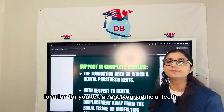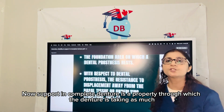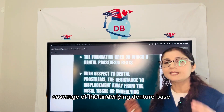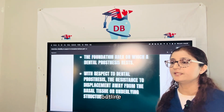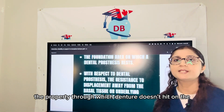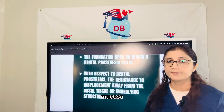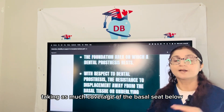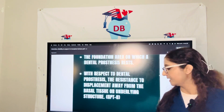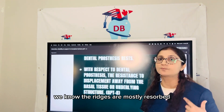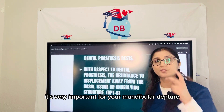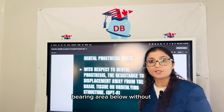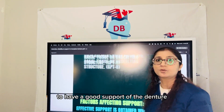Support in complete denture is a property through which the denture takes as much coverage of the underlying denture base outline — the denture doesn't impinge on the mucosa or muscle attachments, while taking as much coverage of the basal seat below. Especially for the mandibular denture, where the ridges are mostly resorbed, it is very important to take as much coverage of the denture bearing area below without impinging the muscles to have good support.